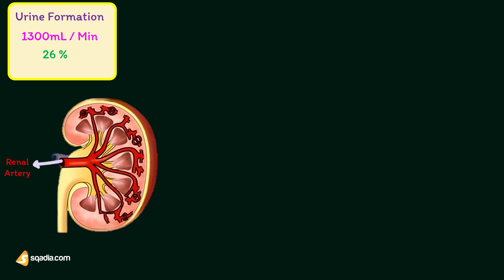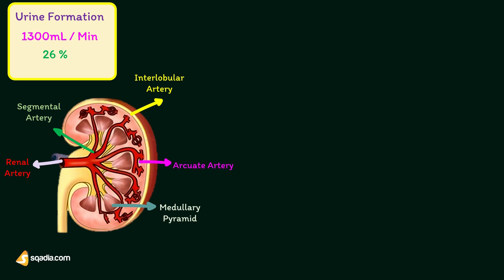The renal artery arises directly from the abdominal aorta and enters the kidney through the hilum, while passing through the renal sinus. The renal artery divides into many segmental arteries. Segmental arteries subdivide into interlobar arteries. The interlobar artery passes in between the medullary pyramids. At the base of the pyramid, it turns and runs parallel to the base of the pyramid, forming the arcuate artery. Each arcuate artery gives rise to interlobular arteries.